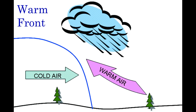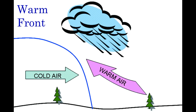The first type of front is the warm front. These form when a warm air mass collides and rides over a cold air mass. The resulting warm front may produce long periods of precipitation and warmer temperatures. The second type of front is the cold front. These form when a cold air mass collides and slides under a warm air mass. The resulting cold front may produce thunderstorms and sometimes tornadoes and cooler temperatures.